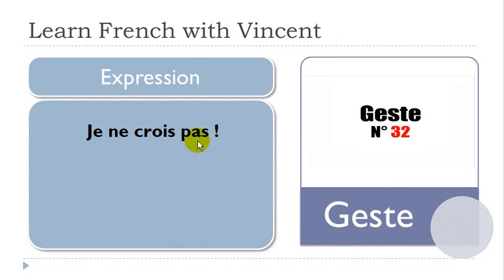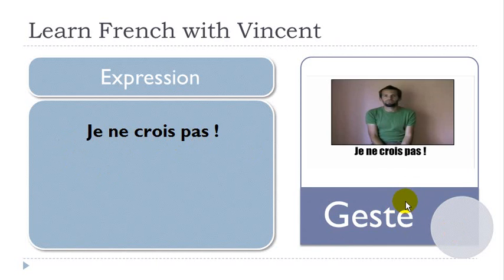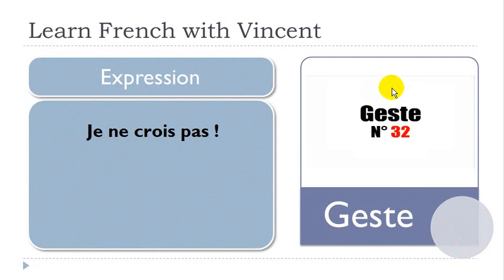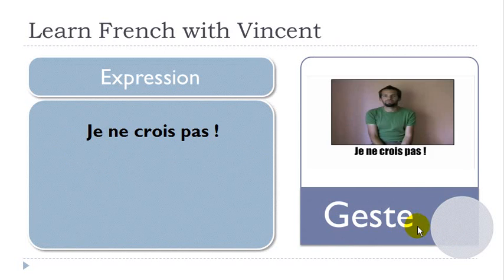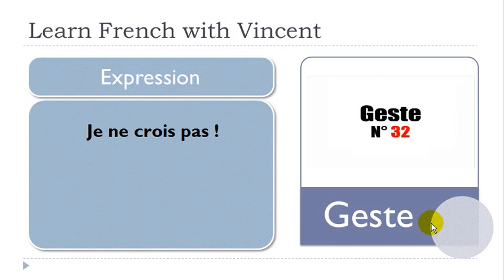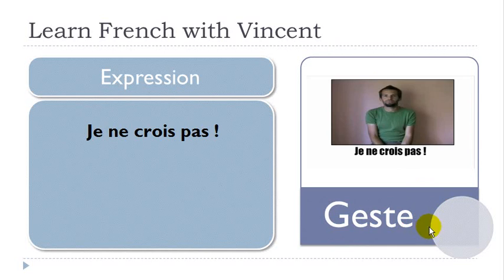'Je ne crois pas' — I don't think so. It's only in the head — you're looking at the sky or the ceiling. When you do like that, you're giving the information to the person you're talking to that you don't think so. Je ne crois pas.